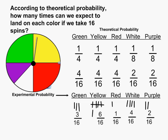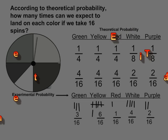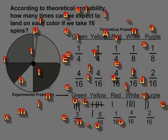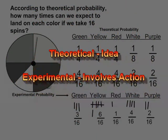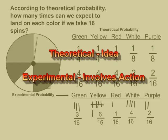So remember: theoretical probability is probability based solely on the sample space shown, without doing any action or collection of data. Whereas experimental probability is probability based on performing an action and collecting data.